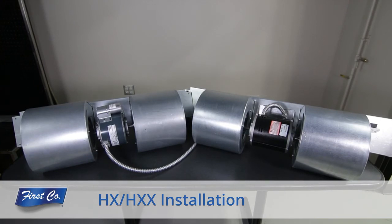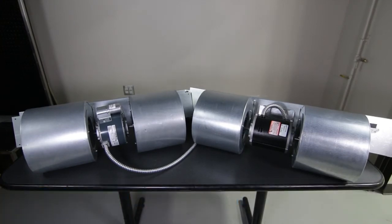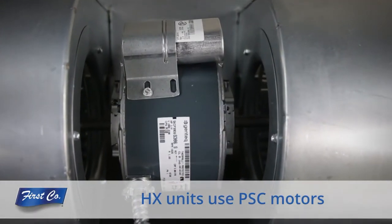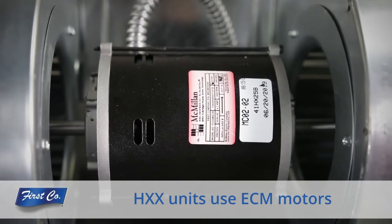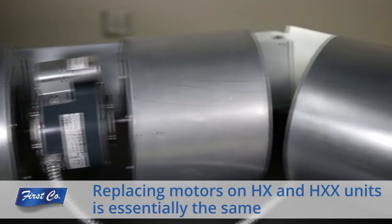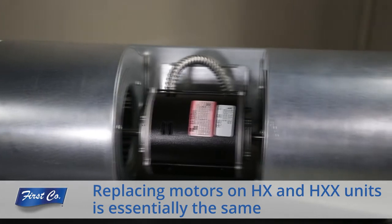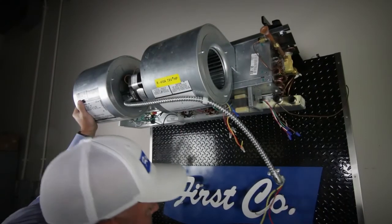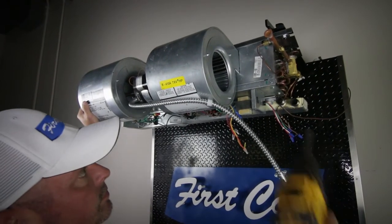If you're working with an HXX unit, the primary difference is the motor itself. The HXX unit uses a PSC motor while the HXX unit uses an ECM motor. The procedure for replacement for both motors is essentially the same. This concludes the procedure for removing and replacing the motor assembly.